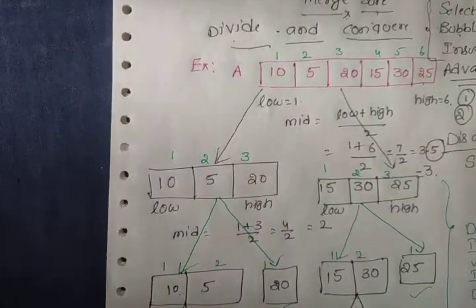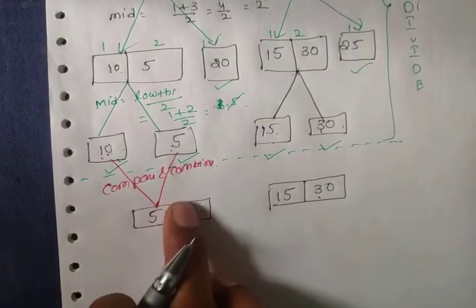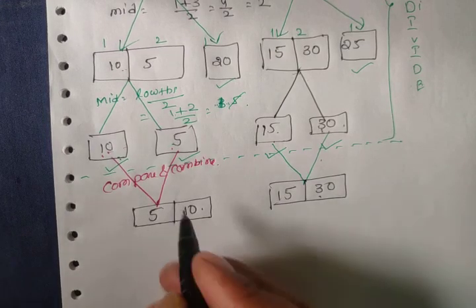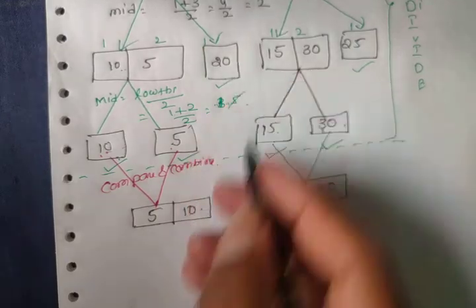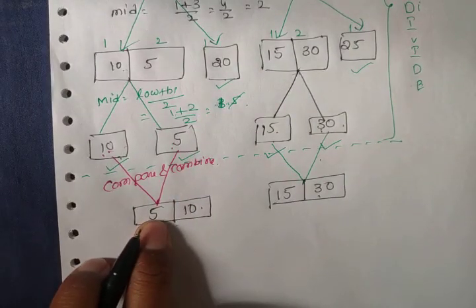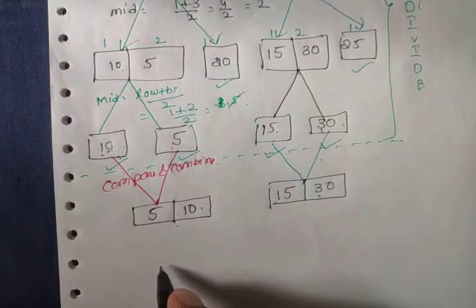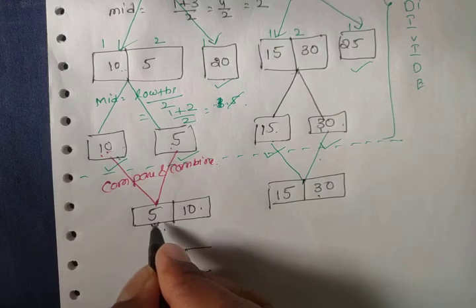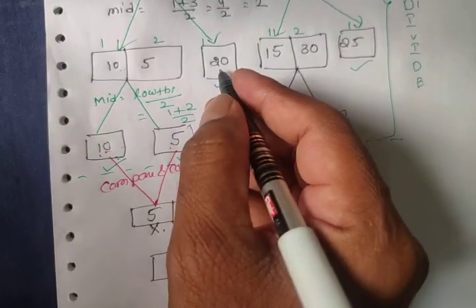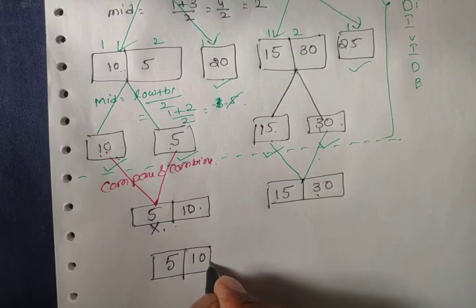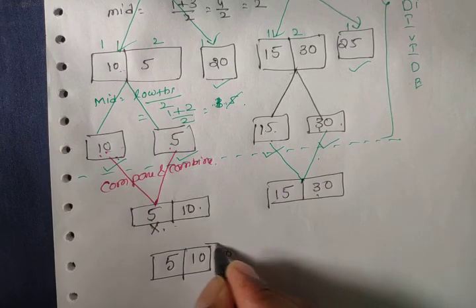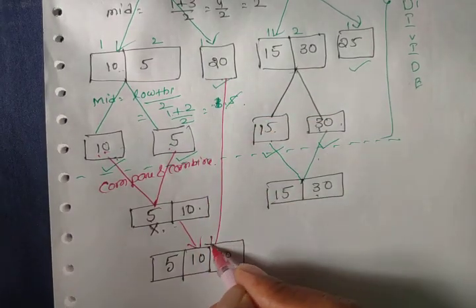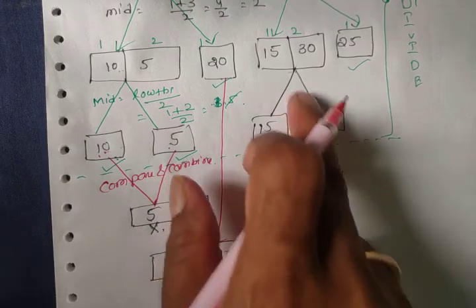Now we go to the next conquer step. We compare [5, 10] with [20]. 5 is less than 20, so 5 goes first. Then 10 is less than 20, so 10 goes next. Then 20 is added, giving us [5, 10, 20].